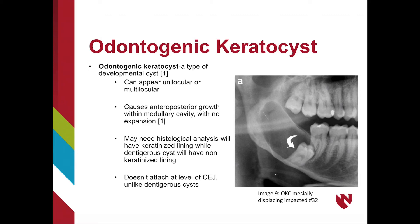OKCs, like dentigerous cysts, are a type of developmental cyst that can appear unilocular or multilocular. There is no expansion seen with OKCs, as growth of these lesions occurs in the anterior or posterior direction. A histological analysis may be needed for differentiation. An OKC will have a keratinized lining, while the lining of a dentigerous cyst will be non-keratinized. OKCs, like ameloblastomas, do not attach at the level of the CEJ of the associated tooth.